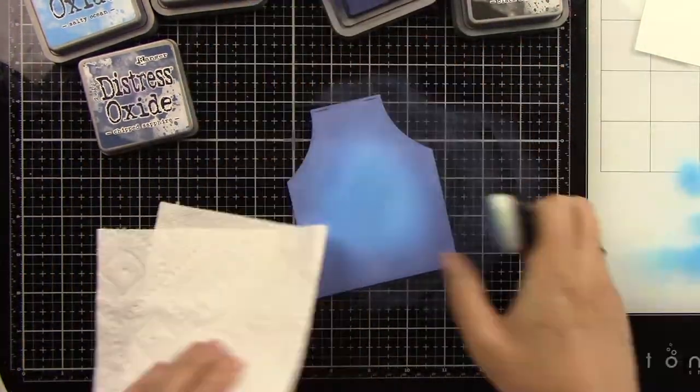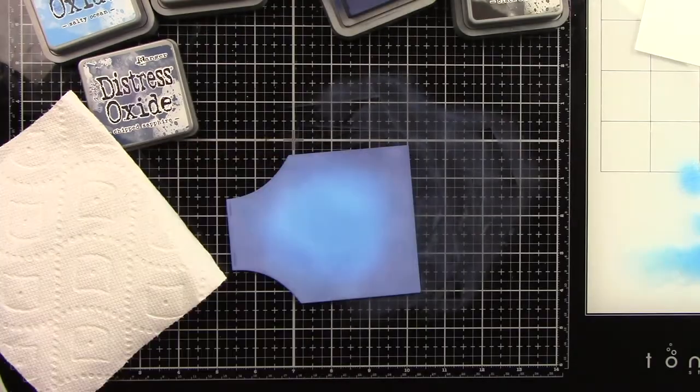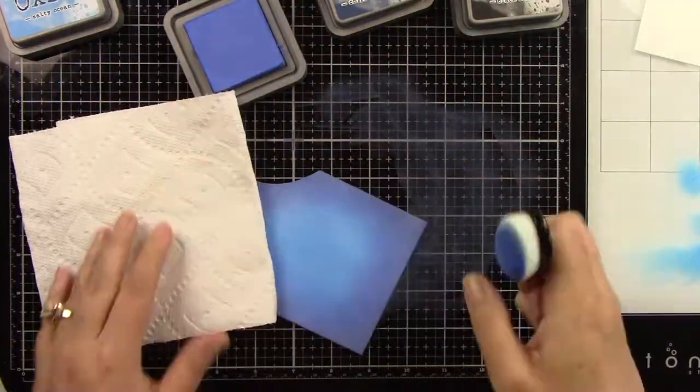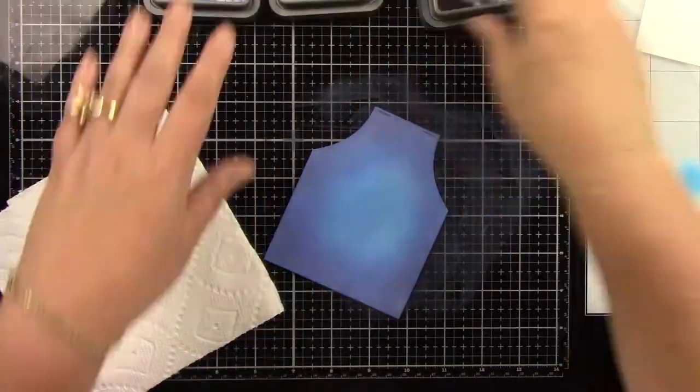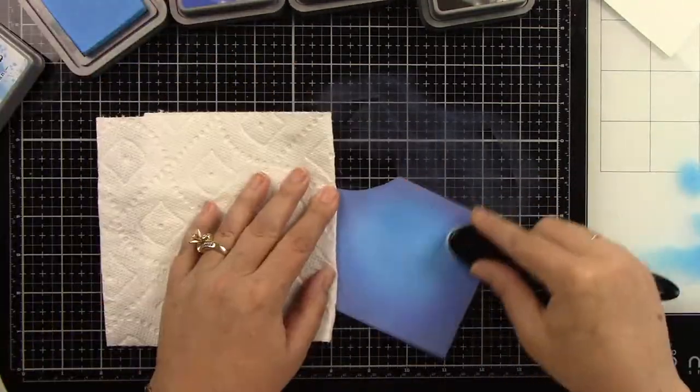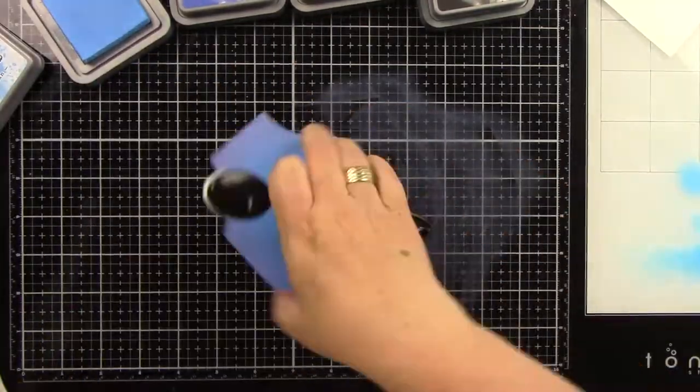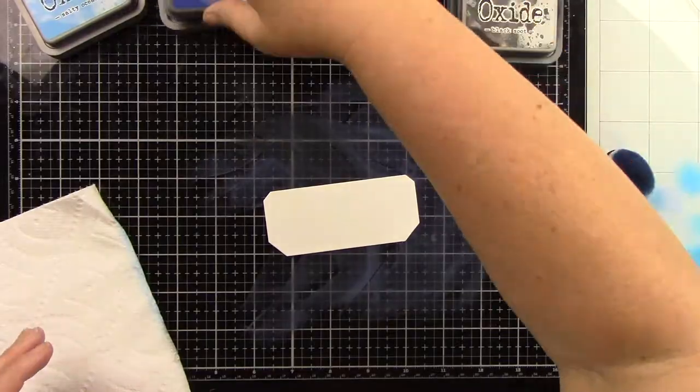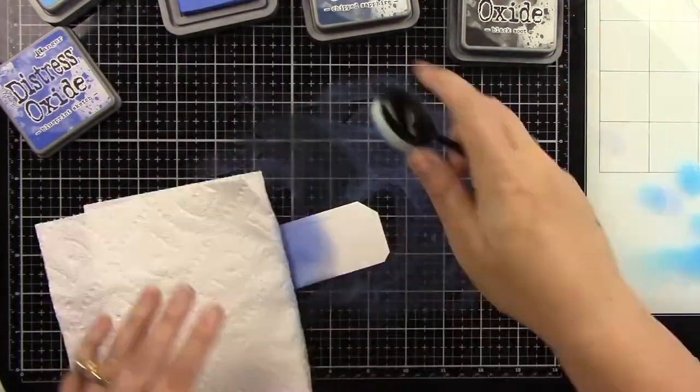On this background piece I'm not using the Black Soot. I will be using that on the little pocket piece. I just grabbed a paper towel so I don't keep putting my fingerprints in that wet ink. Now that it's all blended, you've got this really pretty background.